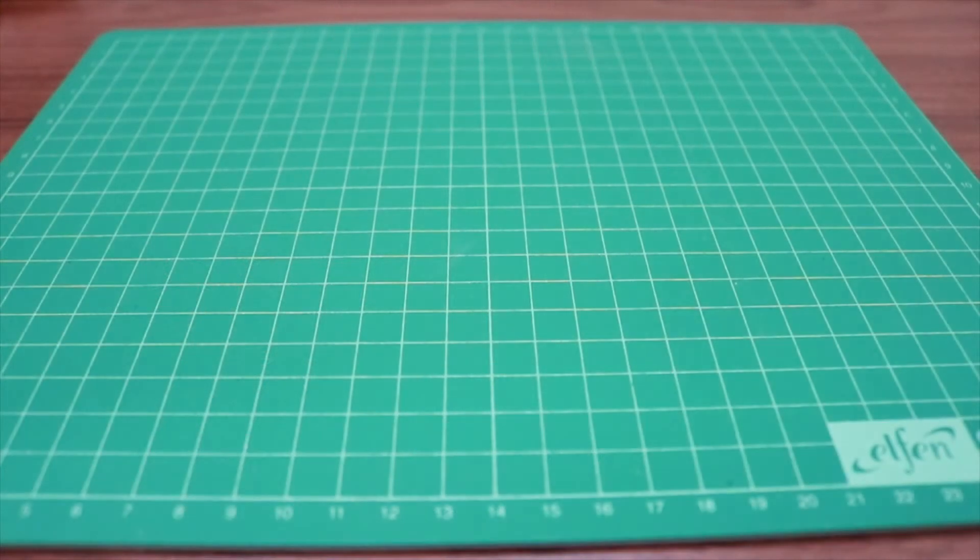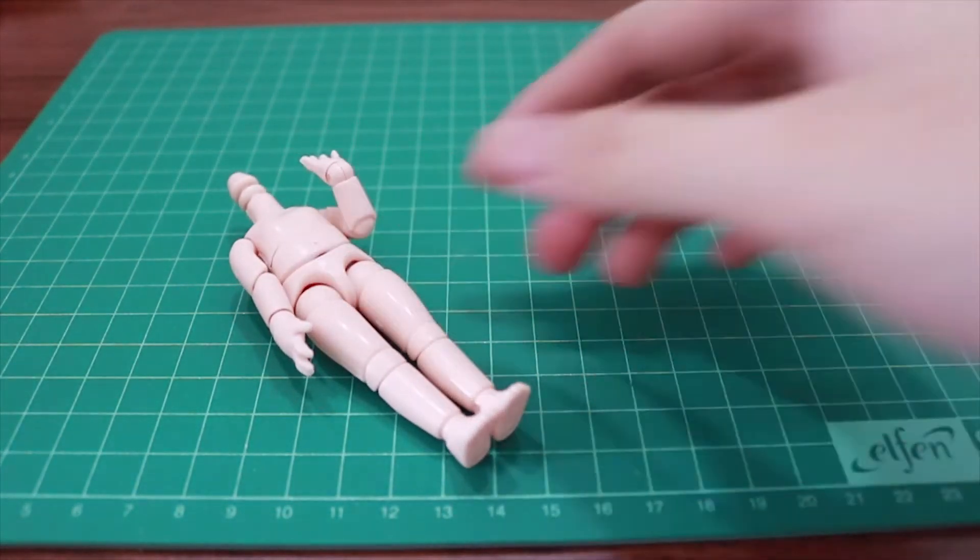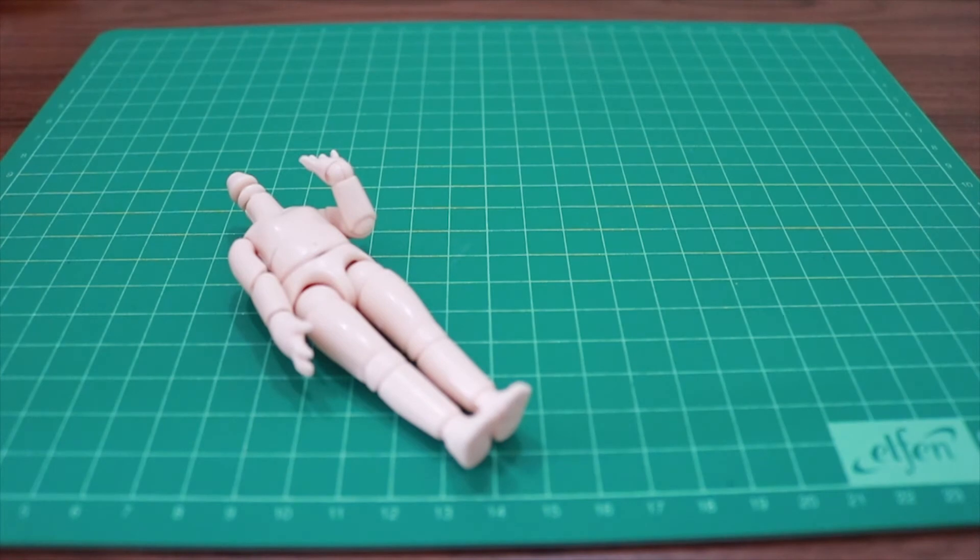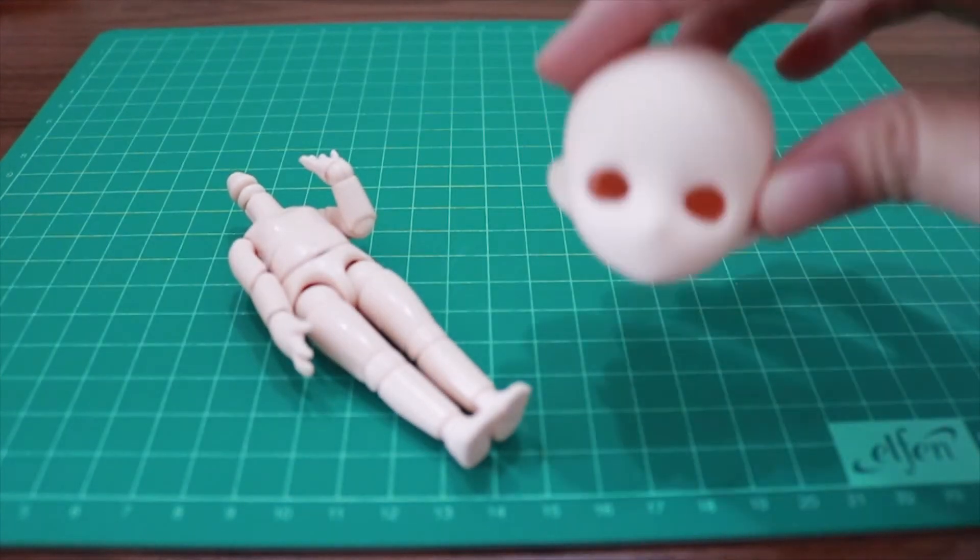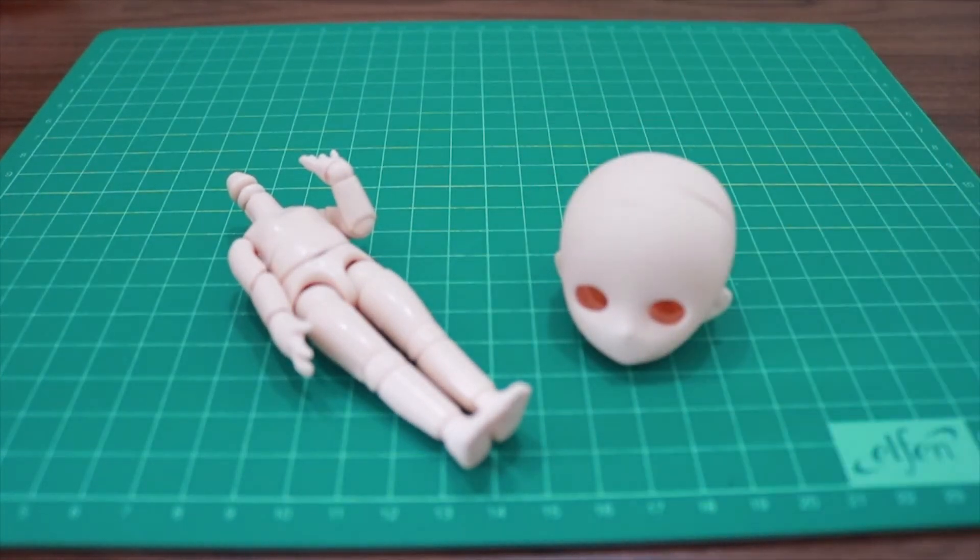Now, let's move to the next step. Here you can see my 11cm white skin Obitsu body. She came with Betty Himei's head.